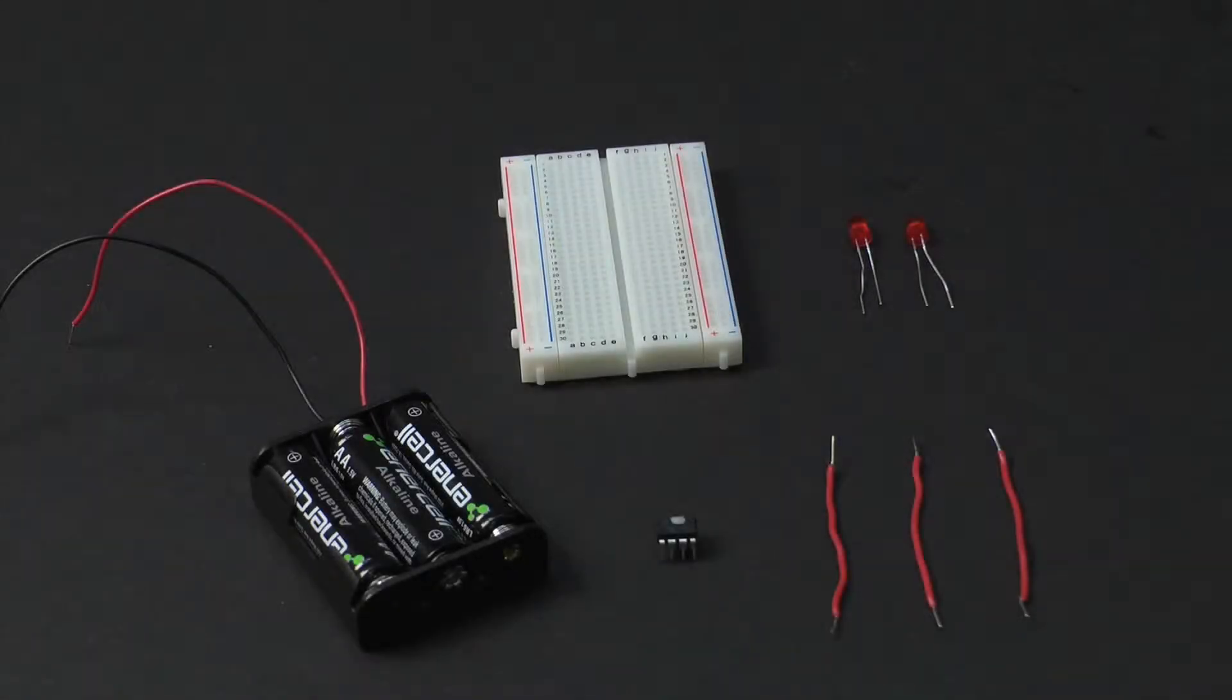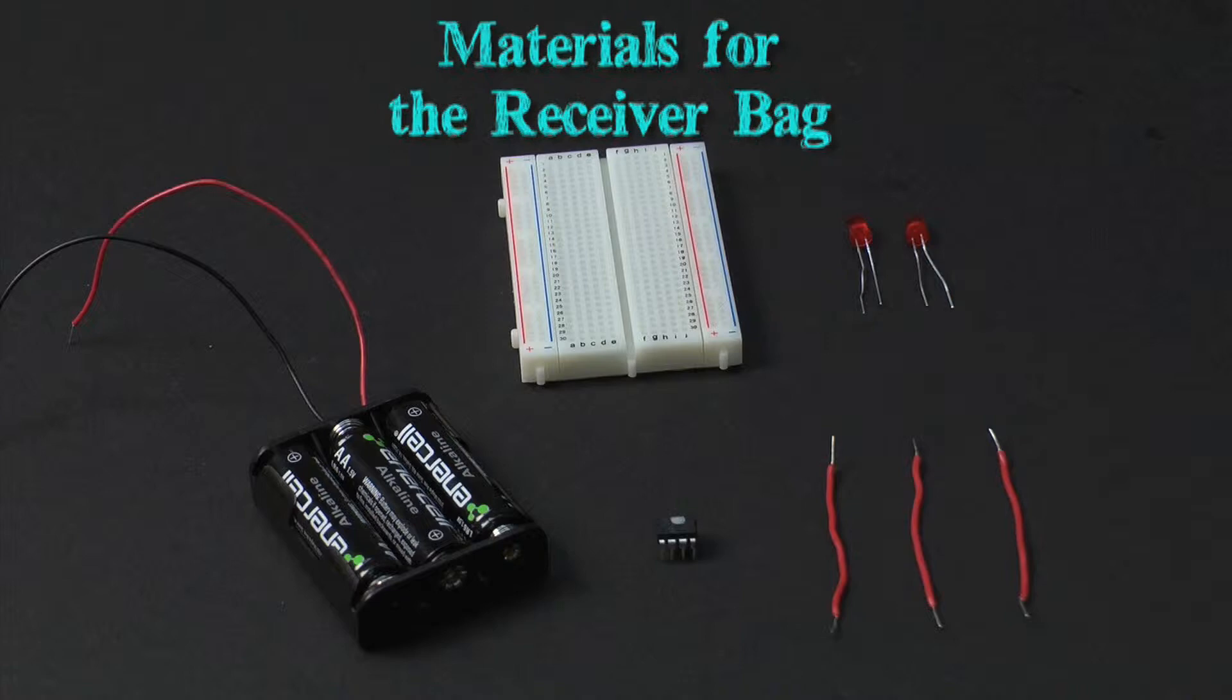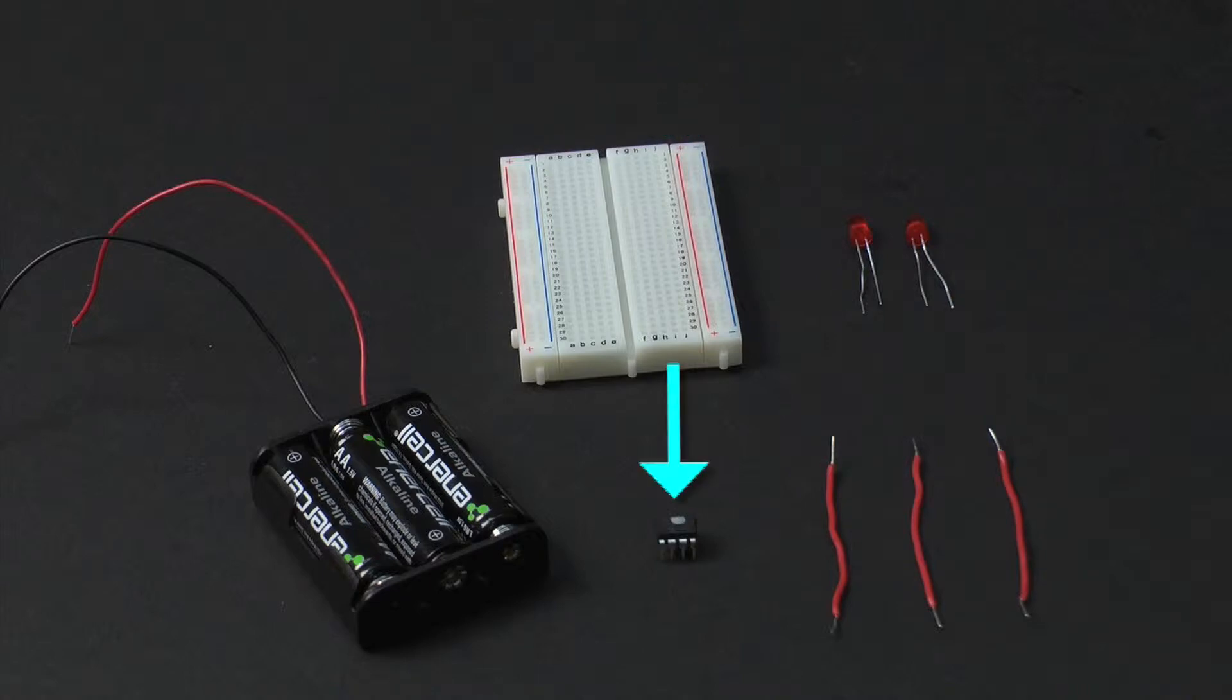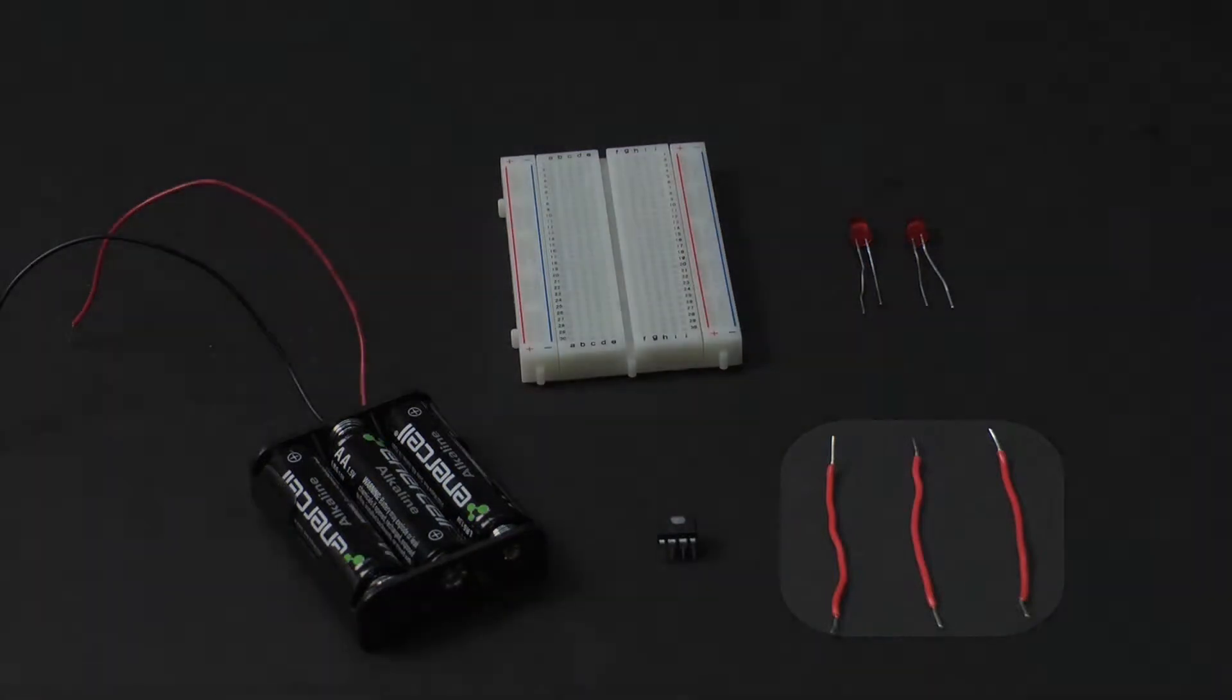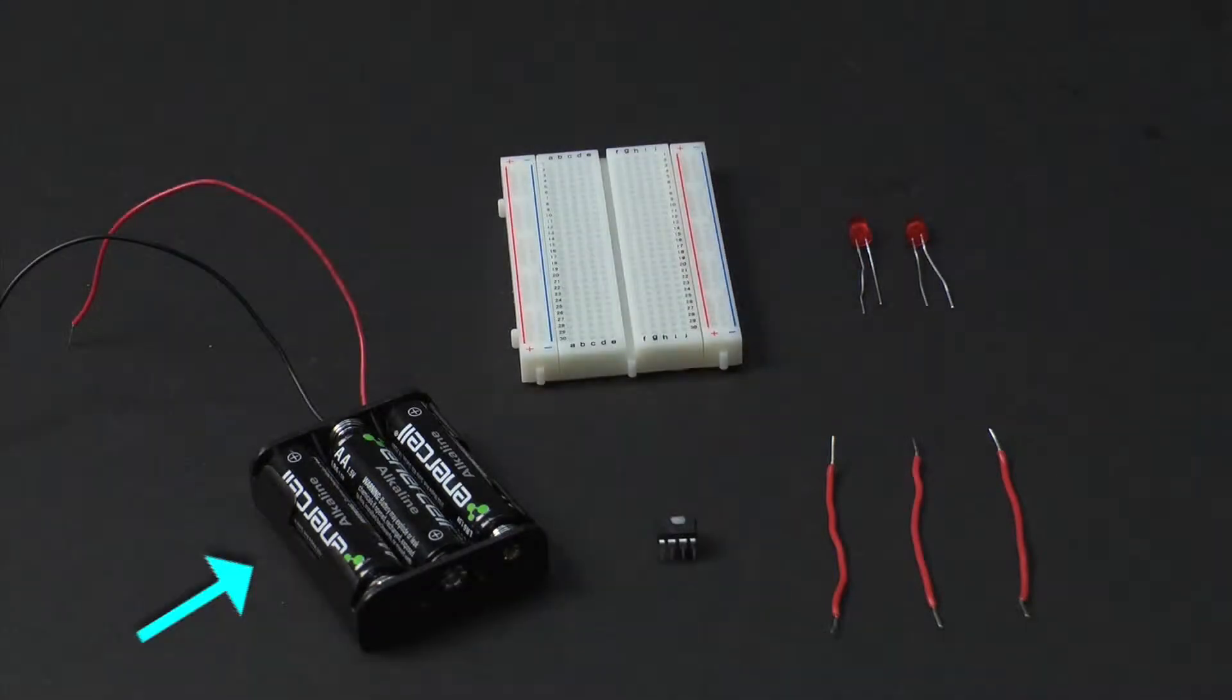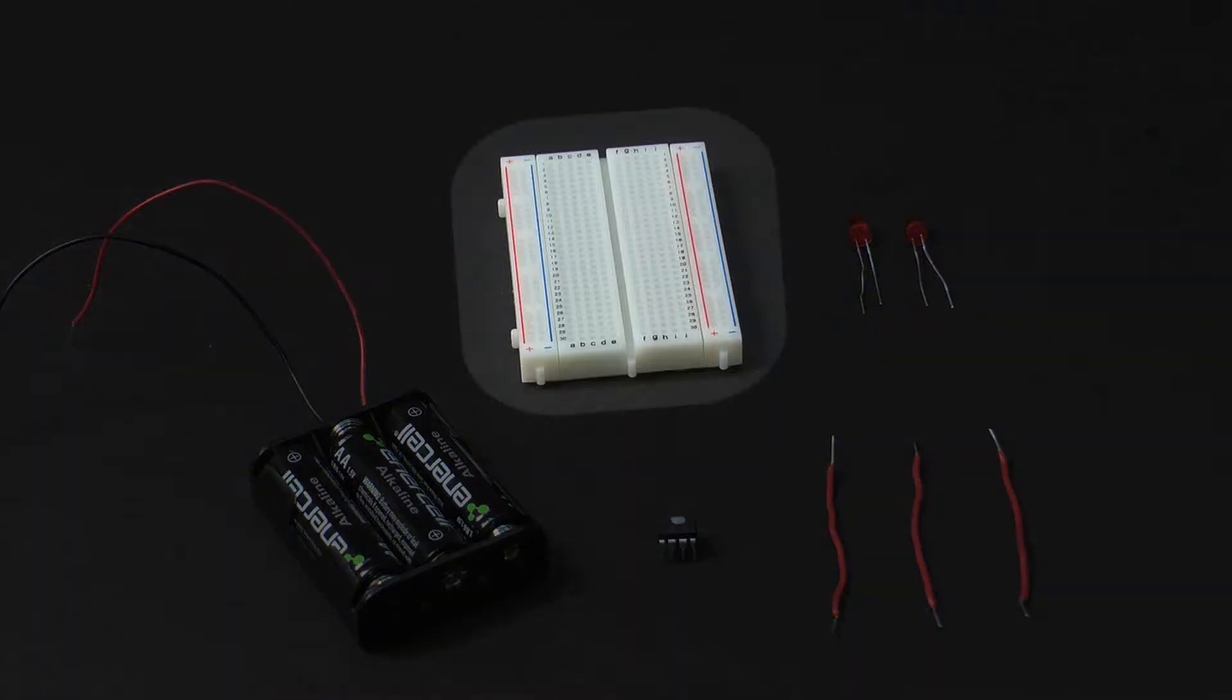For this activity, each group of students should be provided with the following. In the receiver bag, there should be one decoder chip with a silver dot, two LEDs, three 2-inch jumper wires, one battery pack for three AA batteries, and one breadboard.